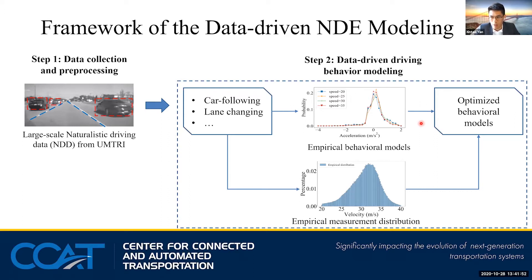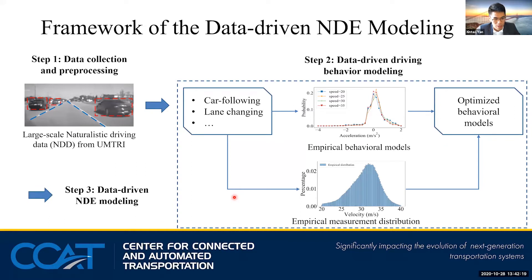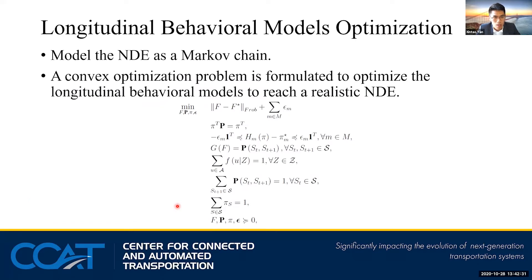Therefore, we proposed optimization-based smoothing techniques to improve upon the empirical behavior models to match the empirical measurement distribution. For example, we choose the velocity distribution which is directly obtained from the NDD. We want to match the simulated velocity distribution with the empirical velocity distribution from the real world. After the second step, we can construct a data-driven naturalistic driving environment with the data-driven initialization method also proposed in this work. Here is how we optimize the longitudinal behavior models. We modeled NDE as a Markov chain, and a convex optimization problem is formulated to optimize the longitudinal behavior model to reach a realistic NDE.